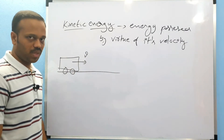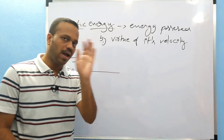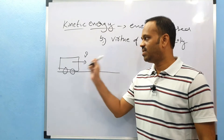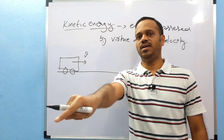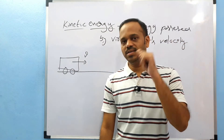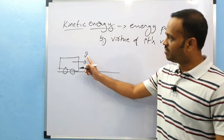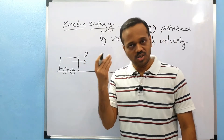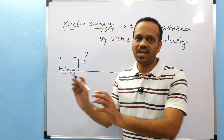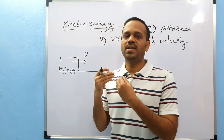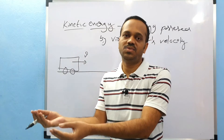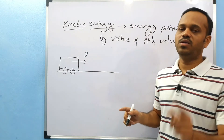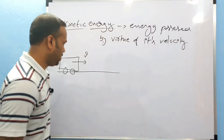We will try to change the energy — bring the velocity to zero. We know that the final energy is zero. So whatever work you do to make the velocity of this vehicle zero, that work is equal to the energy possessed by this vehicle by virtue of its velocity.